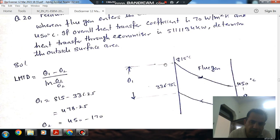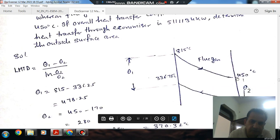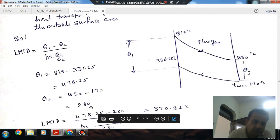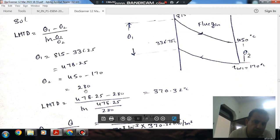Now for counter flow, we can determine θ1 and θ2. So θ1 is 815 minus 336.75 and θ2 is 450 minus 170. So that is 280 and θ1 is 478.25 and θ2 is 280.